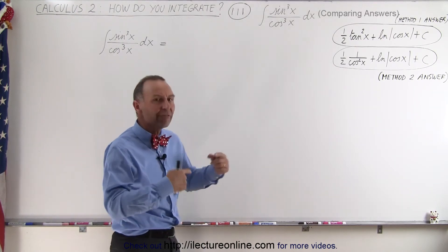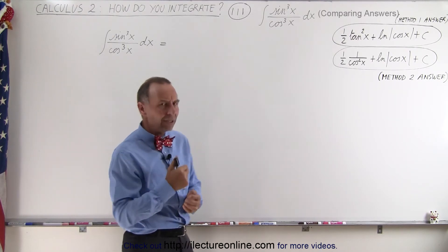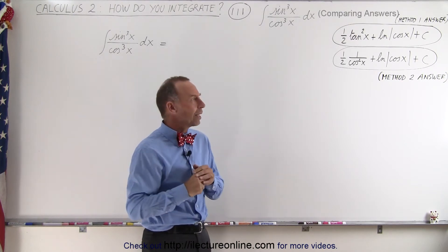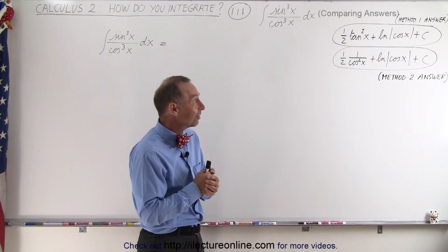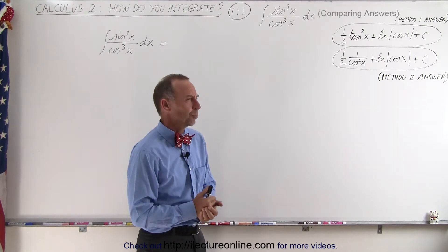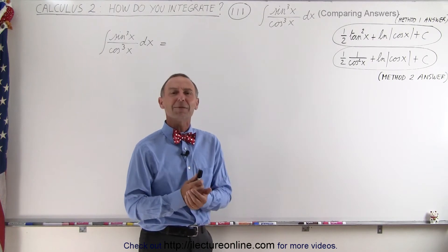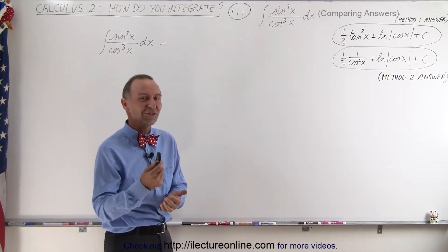And so when I started plugging values in for x I got different numbers. I was literally stumped there for a while and then my wife who actually has a degree in applied mathematics said why don't you take the derivative of both and see if you get the same answer. It didn't dawn on me that was a good suggestion. So let's go ahead and try that suggestion to see what we end up with.